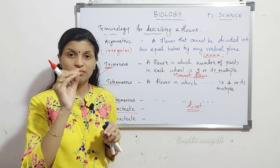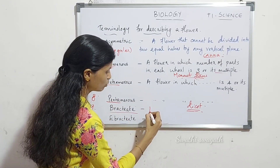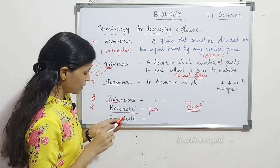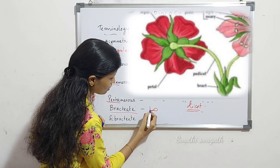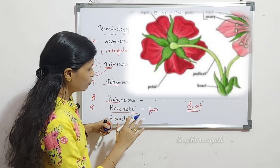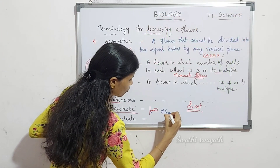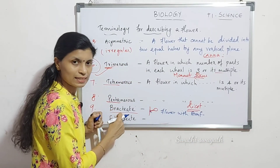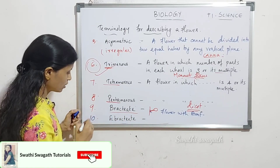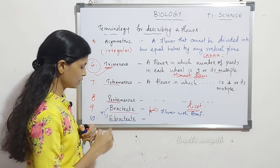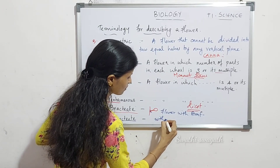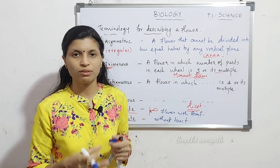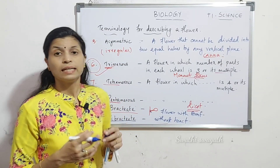The pedicel has leaf-like appendages and outgrowths called bracts. If a flower has a bract, such flowers are called bractate flowers. The 10th terminology is ebractate — the opposite of bractate — meaning a flower without a bract. Not all flowers have bracts. If a bract is present, the flower is called bractate; if absent, it is called ebractate.